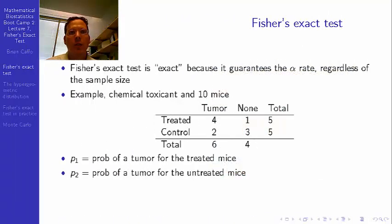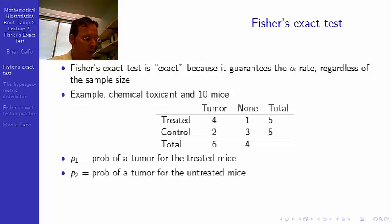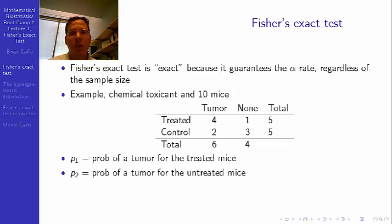So what does 'exact' mean? Fisher's Exact Test is exact because it guarantees the alpha rate. When you do an asymptotic test and use the nominal type 1 error rate of 5%, for example, calculating a 95% confidence interval for the risk difference and declaring the difference significant if the confidence interval doesn't include zero is a valid testing procedure. However, that doesn't guarantee a 5% error rate—it only guarantees that in the limit as sample sizes go to infinity.